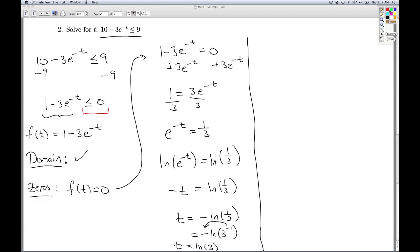Alright, so now it's time to make the sign diagram for f of t. And the only critical value I get on here is the natural log of 3. And I know the function is 0 there. Now I need to pick test values around it.